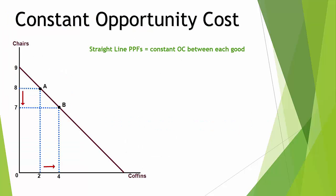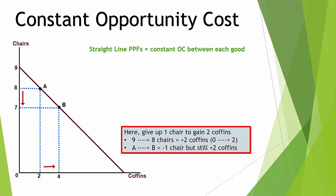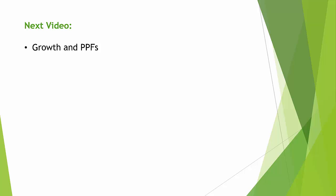Finally, sometimes you'll encounter straight-line PPF curves, which demonstrate constant opportunity cost — there's no outward bowing and the relationship is linear. For example, starting at nine chairs and zero coffins: reducing chair production to eight at point A gains two coffins; moving to point B gives up one more chair and gains two more coffins again, going from two to four coffins. This shows a constant opportunity cost at any point along a straight-line PPF. In the next video we'll look at growth and production possibility frontiers — click the link to go there, or subscribe to see future videos. Thank you.